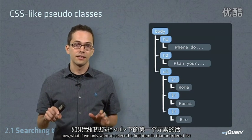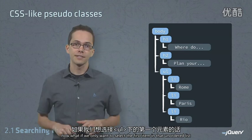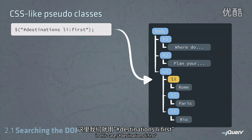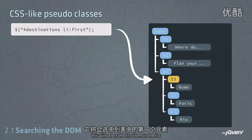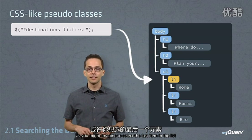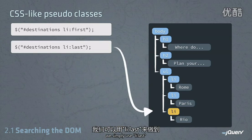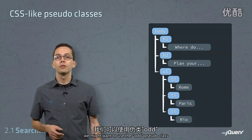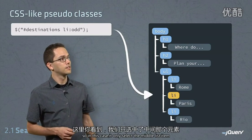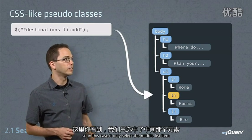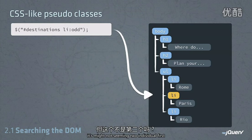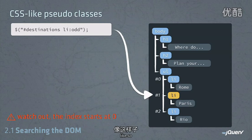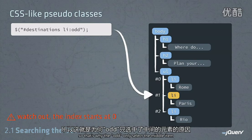Now what if we only wanted to select the first item in that unordered list? We can do that using the pseudo selector — in this case, #destinations li:first. This will select the first item in the list. To select the last item, we simply use li:last. If we wanted to select every other list item, we might use the odd pseudo class, which would only select the middle list item. This might not seem intuitive at first, but you have to understand that the index for these list items starts at zero — that's why :odd only selects the middle item.